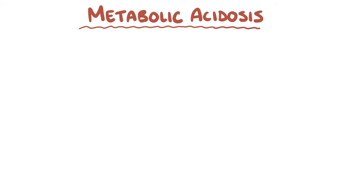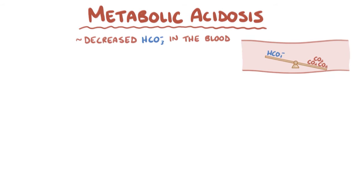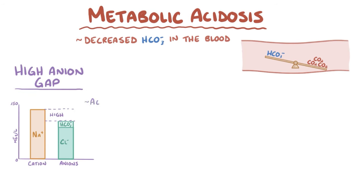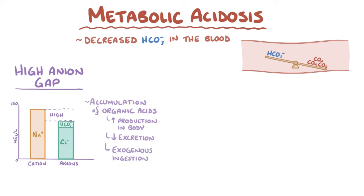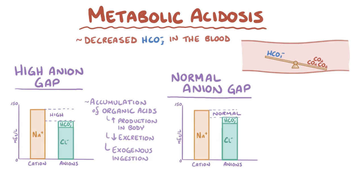As a quick recap: metabolic acidosis is usually caused by a decreased bicarbonate concentration in the blood. It can be classified into high anion gap cases, which are caused by the accumulation of organic acids due to increased production in the body, decreased excretion, or exogenous ingestion. The other type is normal anion gap cases, which are caused directly by a loss of bicarbonate ions, as is the case in diarrhea or type 2 renal tubular acidosis.